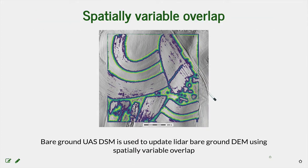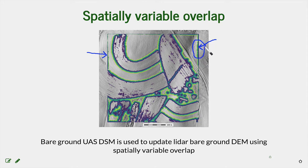This is how the spatially variable overlap looks — visible along the edges of the mapped area. Where the difference was small, we have a very narrow overlap. Where the difference was large, we have a much wider overlap. We also have smooth fusion in those areas where the crop was replaced.